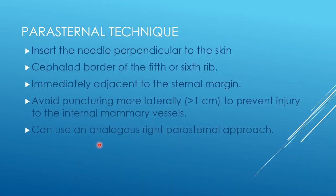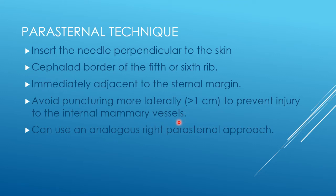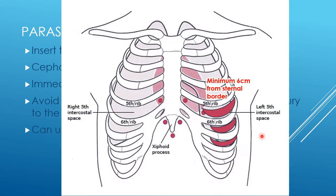The parasternal technique is the final option available. When doing a parasternal procedure, we insert the needle perpendicular to the skin so it goes down vertically. We aim for the cephalad border of the fifth or sixth rib and go as close to the sternal margin as possible to avoid risk of damage to the internal mammary artery. It is sometimes possible to do a right parasternal approach, which will be described in a moment.